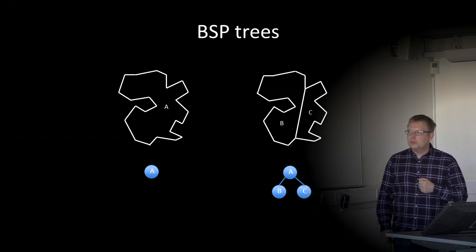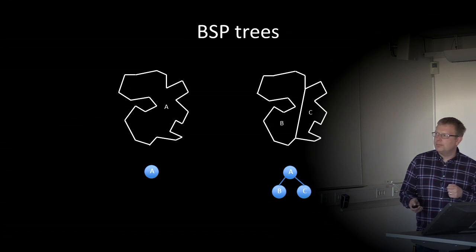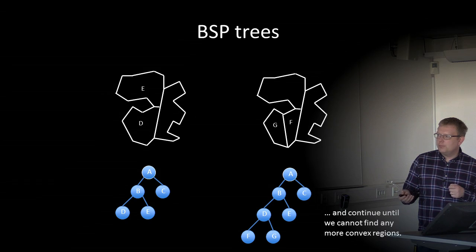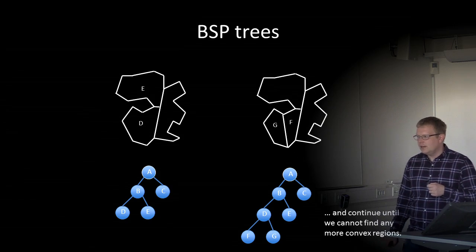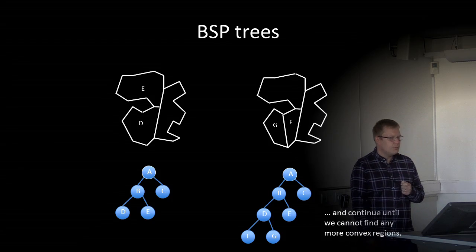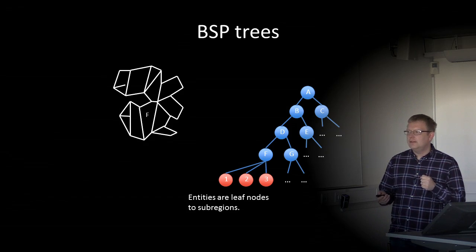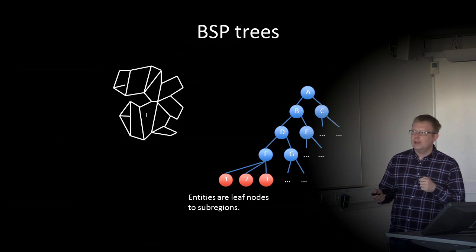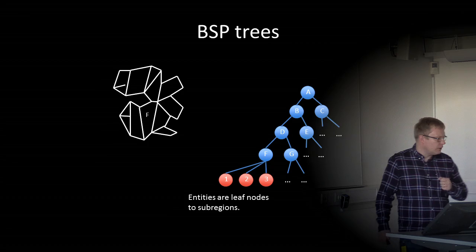BSP trees work as follows: we start with the whole game world as the root. We then divide it into two parts (B and C), then continue dividing each sub-part — D and E, and so on — until we cannot find any more convex regions. This divides the entire game world into small convex regions. Entities are located as leaf nodes in sub-regions — for example, entities 1, 2, and 3 are in region F. Knowing this, we know that from region F we cannot see regions in the upper part of the map, so we don't need to care about entities located in those regions.